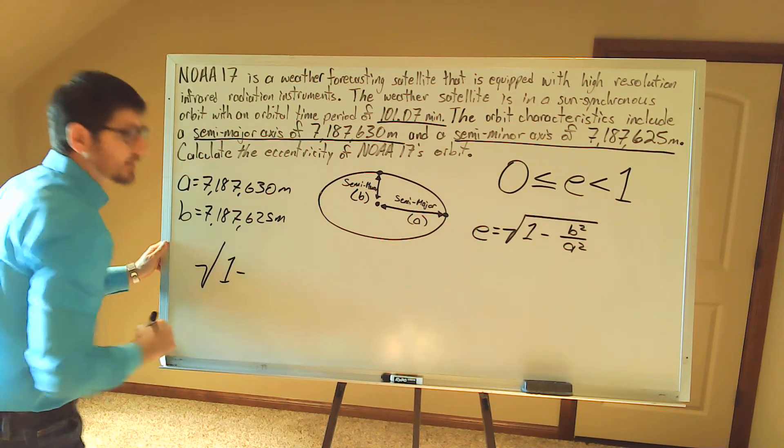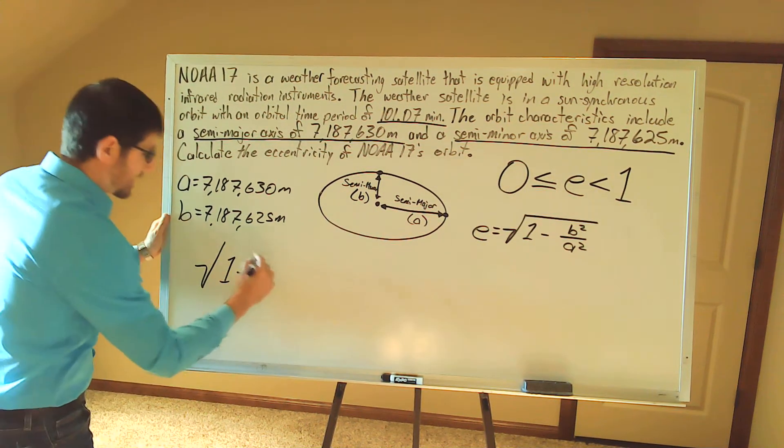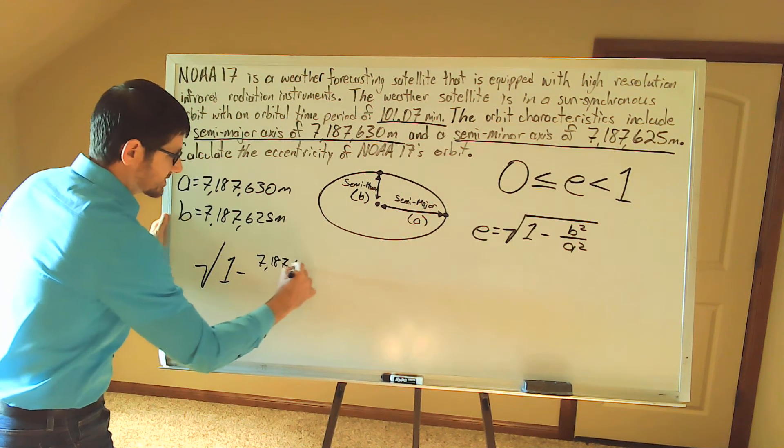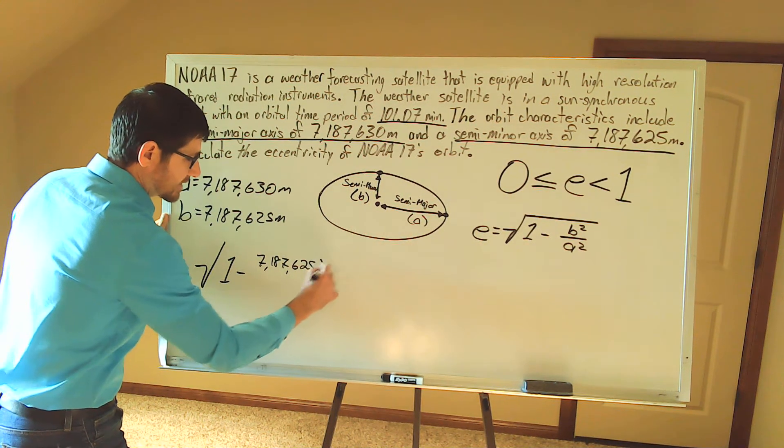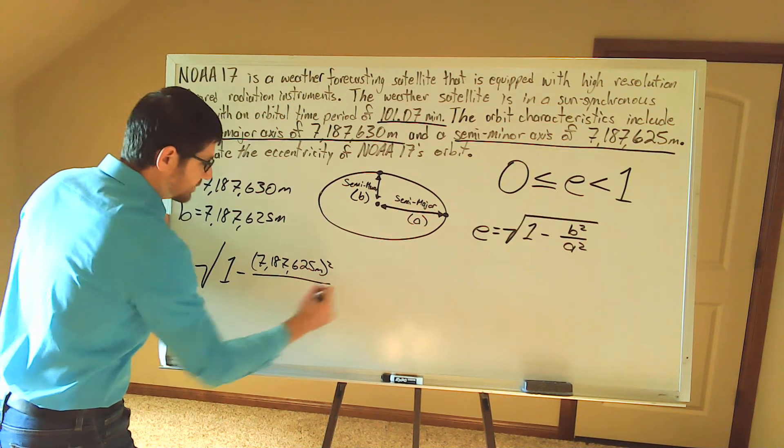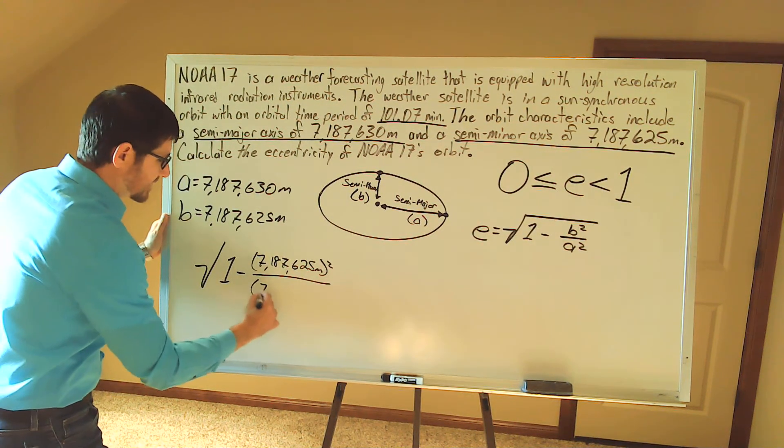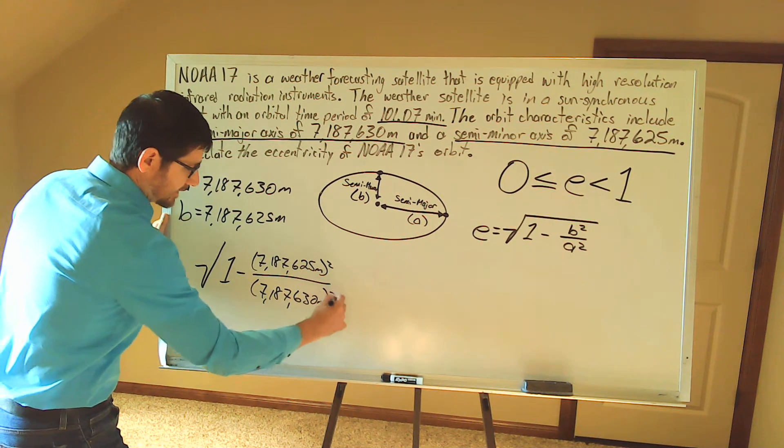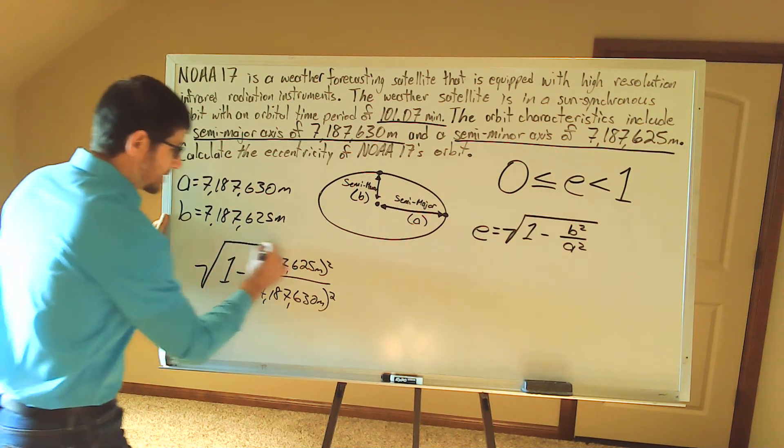So 1 minus, in my numerator right here I have 7,187,625 meters. We're going to square this value. In my denominator, 7,187,630 meters, and we're going to square that.